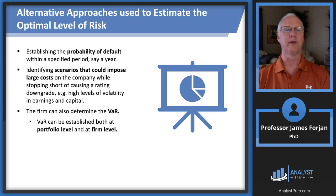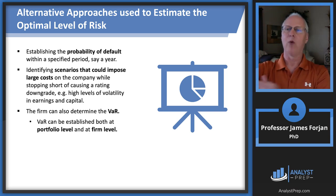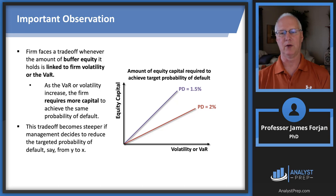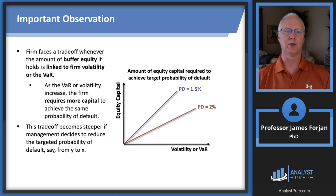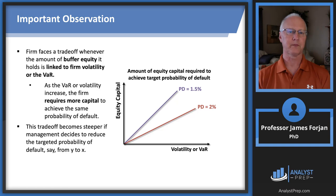We can figure out the probability of default during a specific period, say six months or one year, using sensitivity or scenario analysis to model different scenarios that would cause a ratings downgrade. One of those outputs could be value at risk. Looking at this graph, we have volatility of value at risk on the horizontal axis and equity capital on the vertical axis. We're trying to figure out how much equity we need to identify that probability of default.